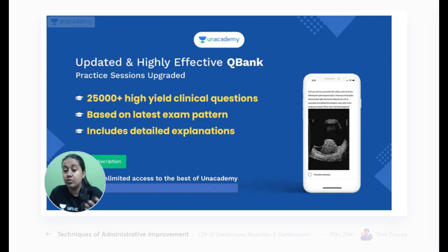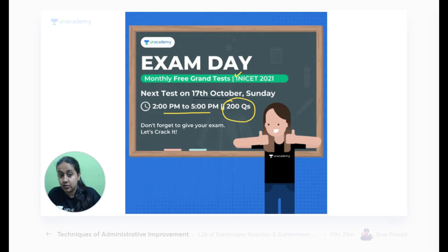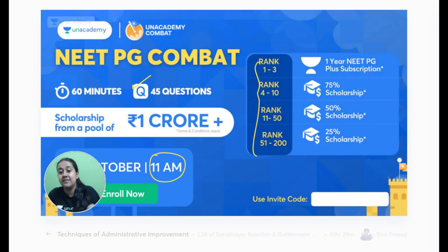We have a highly effective question bank and now provide explanations along with answers. An important notice: on 17th October, next-to-next Sunday, there's a free grand test for INICET — three hours, 200 questions, with an all-India rank. We're also having a NEET PG Combat on 10th October, 11 AM — a one-hour session of 45 questions. Top 200 rankers get scholarships of 100%, 75%, 50%, or 25% depending on rank. Please use code J-STAR-10.